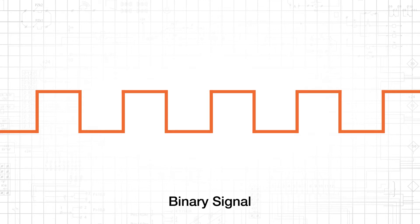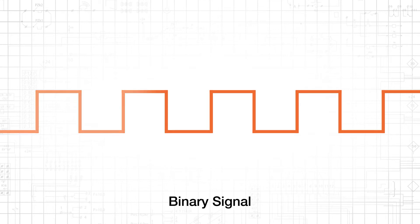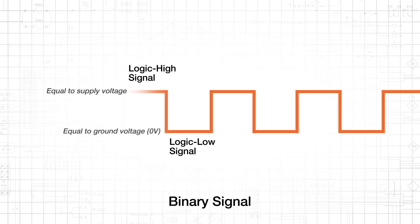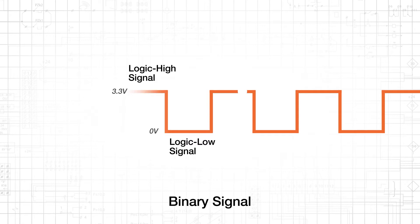In typical single-ended digital circuits, a logic high signal has a voltage that is equal to the supply voltage, and a logic low signal has a voltage that is equal to the ground voltage or zero volts. If the supply voltage for a digital circuit is 3.3 volts, electrical signals would resemble rectangular waveforms that transition between 0 and 3.3 volts.